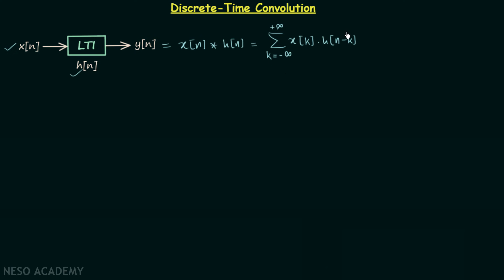Let's understand what we are actually doing here. We have two signals x[n] and h[n]. We change the independent variable n to a dummy variable k, giving us signal x[k] in place of x[n] and signal h[k] in place of h[n]. We then leave x[k] alone and focus on signal h[k].